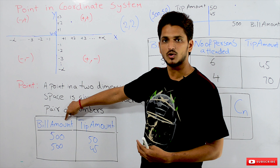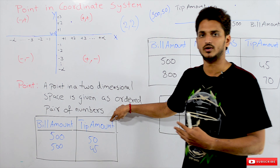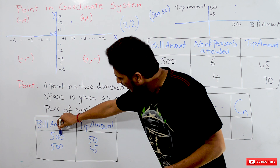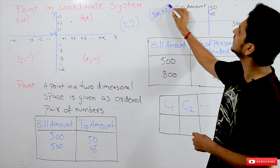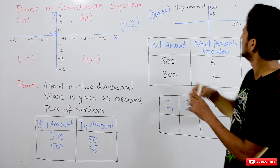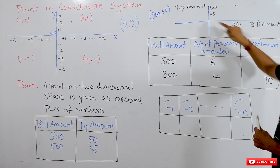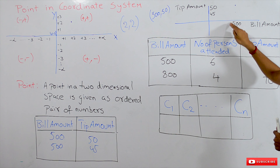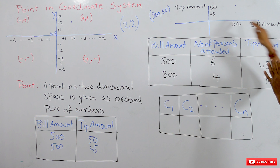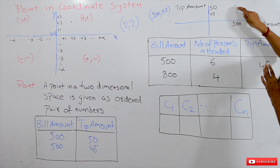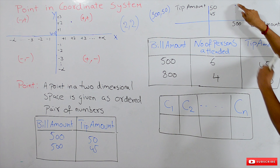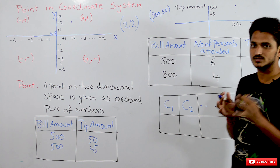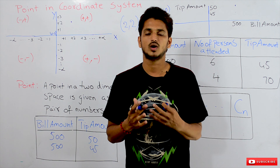The X coordinate is considered as bill amount and the Y coordinate is considered as tip amount. A data point looks like (500, 50) in two-dimensional coordinate space. We move 500 units towards the positive side of the X axis (bill amount) and 50 units towards the positive side of the Y axis (tip amount). This is where our data point lies.